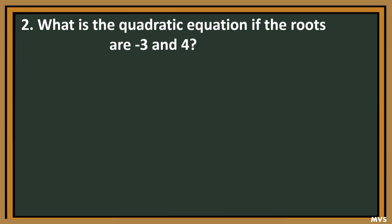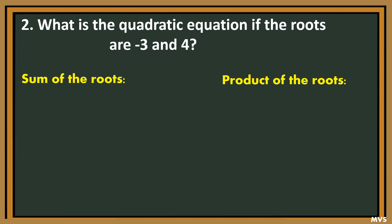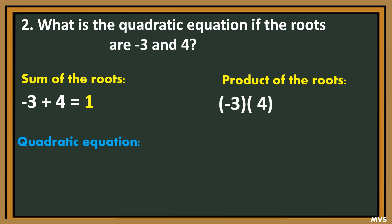Second problem: what is the quadratic equation if the roots are negative 3 and positive 4? First, we're going to solve for the sum of the roots and the product of the roots before we go to the quadratic equation. The sum is negative 3 plus 4, that is positive 1. The product of the roots is negative 3 times 4, that is negative 12.